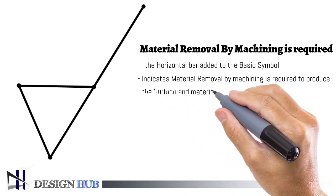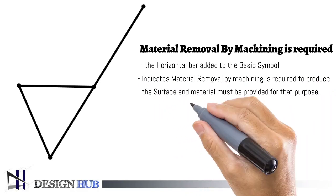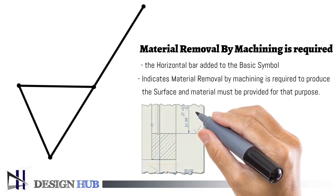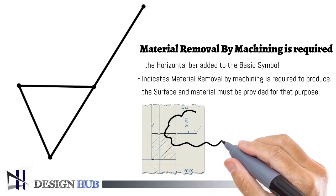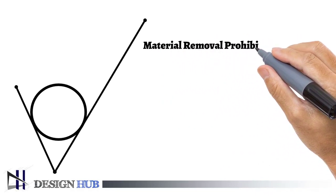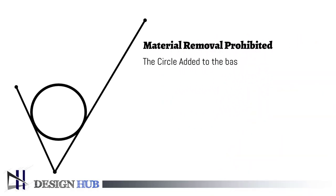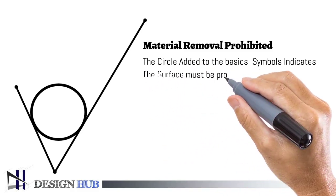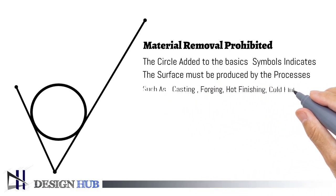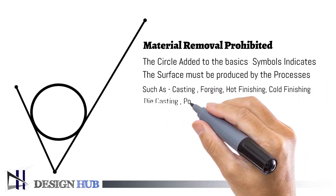If you want material removal prohibited, you can use this symbol. For this, we add a circle to the basic symbol. This symbol is used when you want to produce the surface using casting, forging, hot finishing, cold finishing, die casting, powder metallurgy, or injection molding.